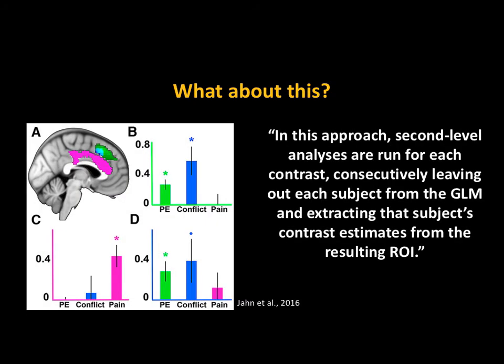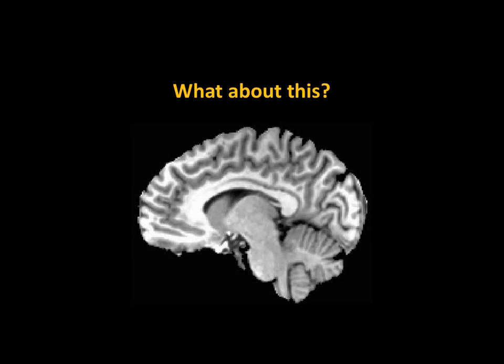What about this? Some guy published a paper a couple years ago, and in the methods section, he said, in this approach, second-level analyses are run for each contrast. Consecutively leaving out each subject from the GLM and extracting that subject's contrast estimates from the resulting ROI. So run the entire GLM, but leave out one subject, whatever the map looks like, if you find a significant cluster, say in the MPFC, extract that subject, and then consecutively do that for every subject. It's called cross-validation. Is that biased?